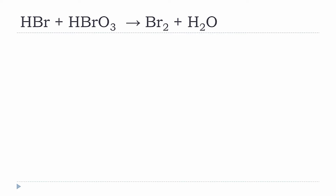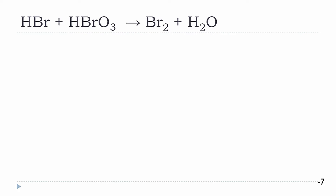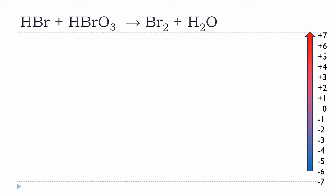We will be using the oxidation number method to balance this equation. An increase in oxidation number always indicates oxidation, so going from a negative value to a positive value indicates an increase. Comparing oxidation numbers between reactants and products tells you whether the process is oxidation or reduction — for example, increasing from negative 7 to positive 7. This guideline applies to any redox reaction.